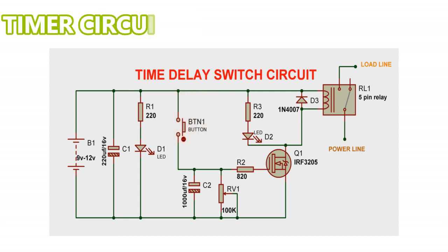The timer circuit consists of electrolytic capacitor C2 and the pull-up resistor. The capacitor stores its maximum electric charge, which is dependent on the capacitor value, once the button is pushed. Charge from the capacitor is used by the switching circuit. Once the button is released, the switch circuit remains on for a little time, which is a result of the pull-up resistor discharging the charge stored in the capacitor over time.